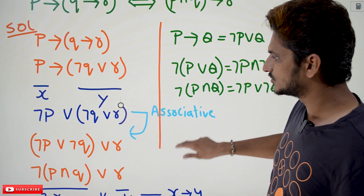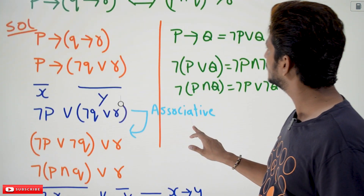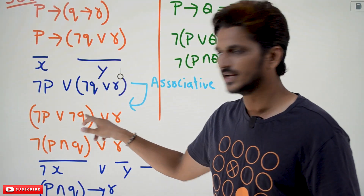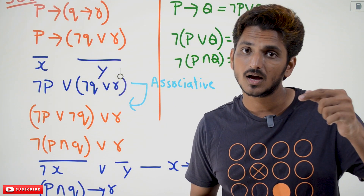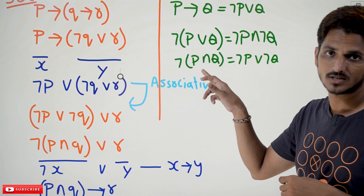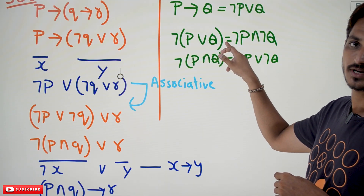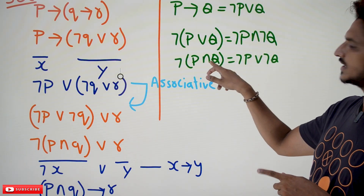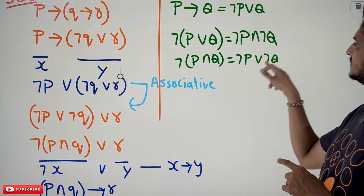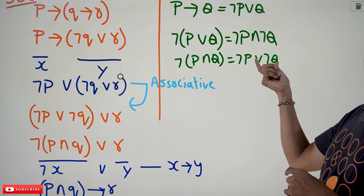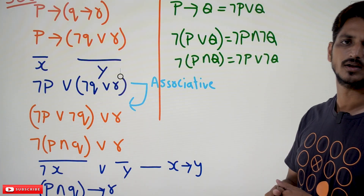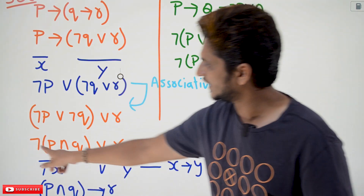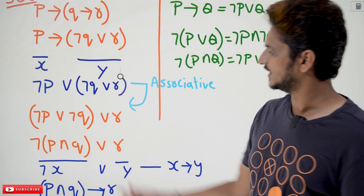Why we are placing brackets around negation P disjunction negation Q? Because the output shows P conjunction Q. Here, negation P disjunction negation Q — by De Morgan's law, take the negation outside: De Morgan's law says negation of (P disjunction Q) can be written as negation P conjunction negation Q, and negation of (P conjunction Q) equals negation P disjunction negation Q. Our equation is in this form, so taking out the negation outside gives us negation of (P conjunction Q), disjunction R.